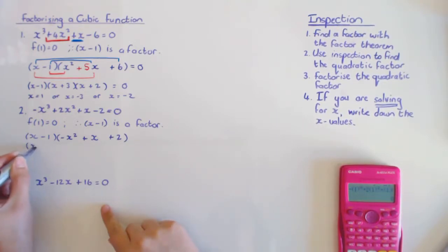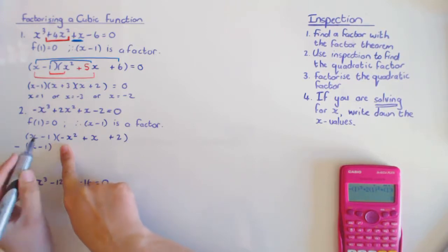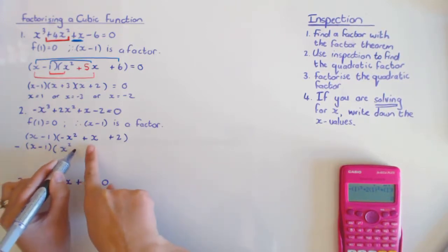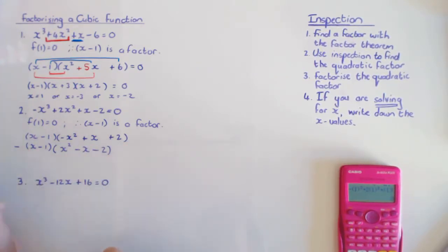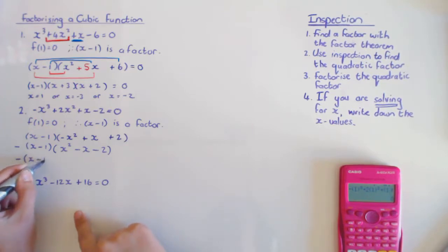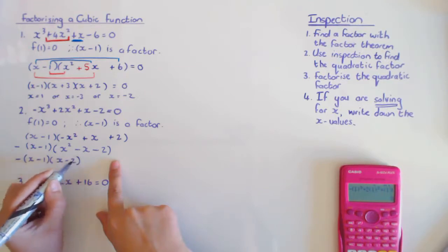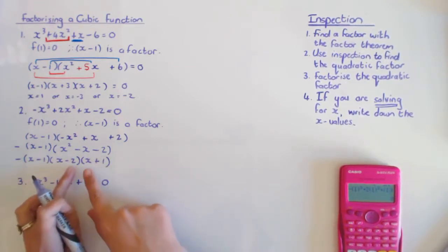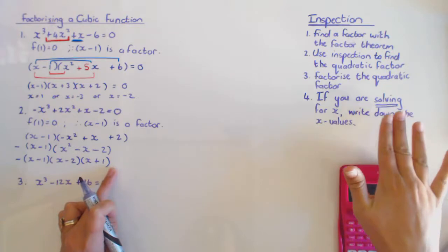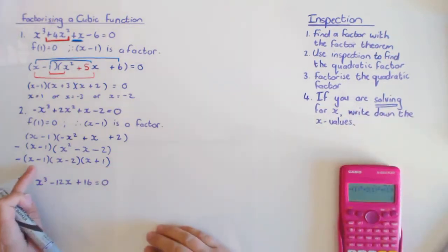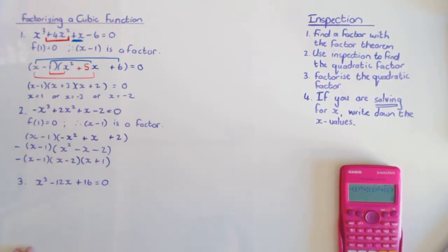Before factorizing the quadratic bracket, I take out the negative to get x squared minus x minus two, changing all the signs. Factorizing this gives x minus two times x plus one. Those are my factors. If solving for x, write down x equals one, x equals two, or x equals negative one.